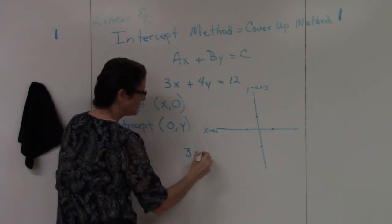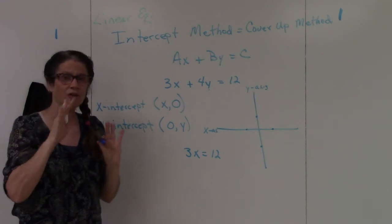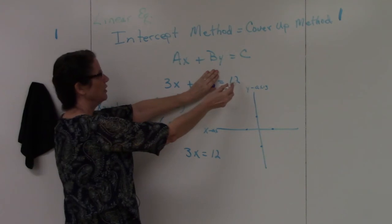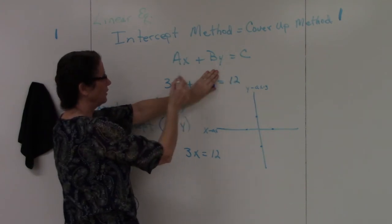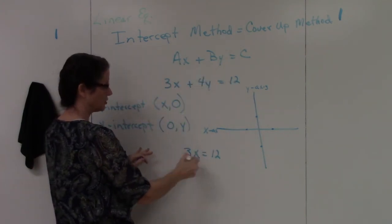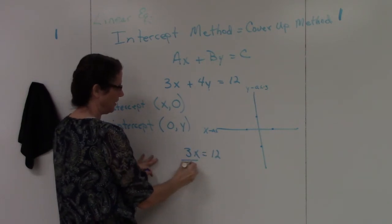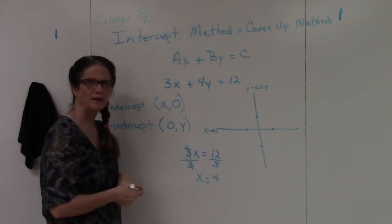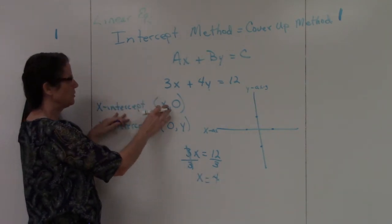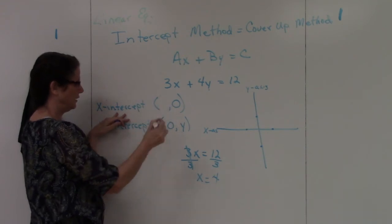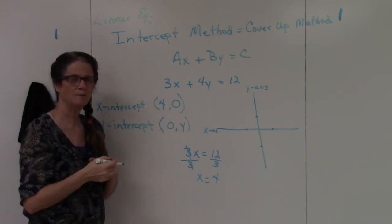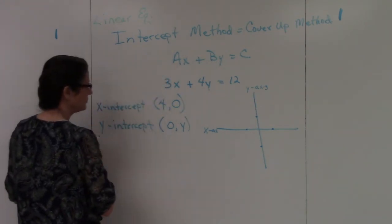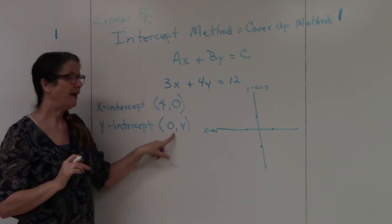You're going to get so good at this that you won't have to write anything down — you'll just look at it and see that x equals 12 divided by 3. To solve for x, divide both sides by 3, and x equals 4. So my x-intercept for this equation is the point (4, 0). Now we're going to find the y-intercept, which is when x is zero.